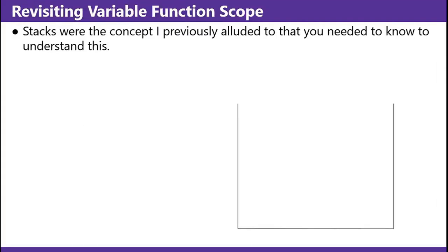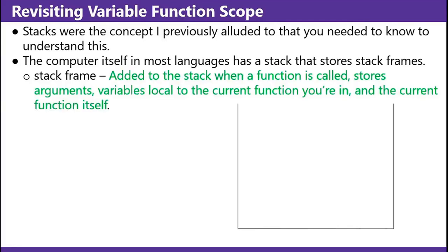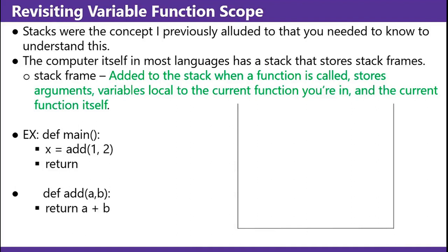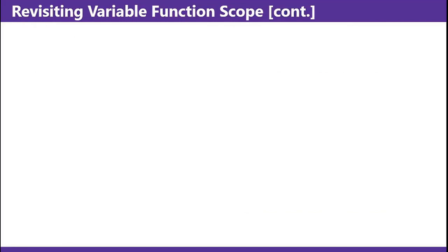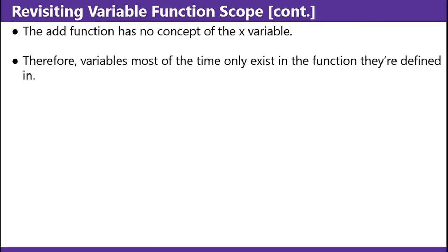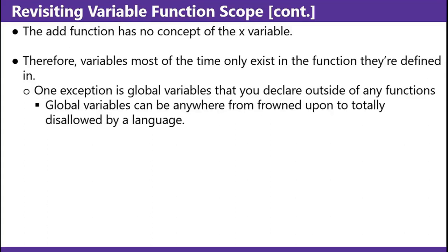Revisiting variable and function scope. Stacks were the concept I previously alluded to that you needed to know to understand this. The computer itself in most languages has a stack that stores stack frames. A stack frame is added to the stack when a function is called — it stores arguments and variables local to the current function you're in and the current function itself. def main, x equals add(1, 2), return. add(a, b), return a plus b. Main is added and says x is going to be the result of calling the add function with 1 and 2. You push another stack frame on with the add function and it returns 3. 3 is given back, x now equals 3. The add function has no concept of the x variable — therefore, variables most of the time only exist in the function they're defined in. One exception is global variables declared outside of any functions. The other exception is block-scoped variables — a variable defined in an if block only exists within the if block.